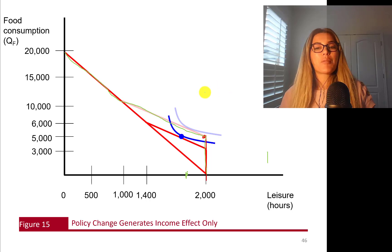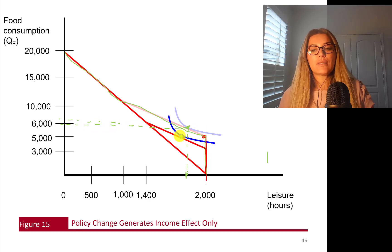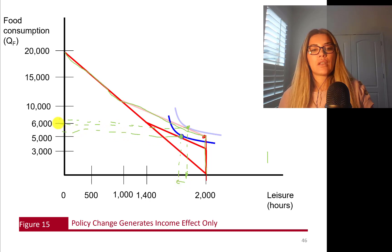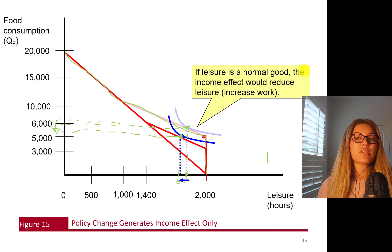Pure income effect means you are poorer. You were at one point on the budget line — a given level of leisure and food consumption. When you jump to the new point, this is a pure income effect: you're poorer. So you're going to consume less leisure, and you're also going to consume less consumption goods — less food consumption. Of course, you're going to have to work more. If leisure is a normal good, the income effect would reduce leisure and increase work. That's a nice outcome.